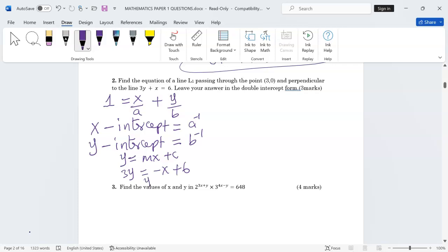To remain with y, we will have -1/3 x + 2. At this point now we can conclude that the gradient m1 for this line is -1/3.